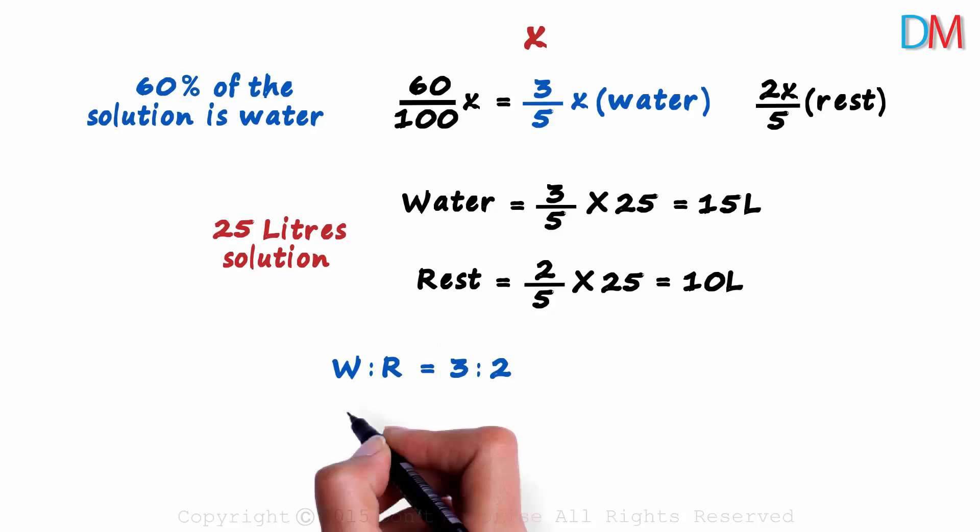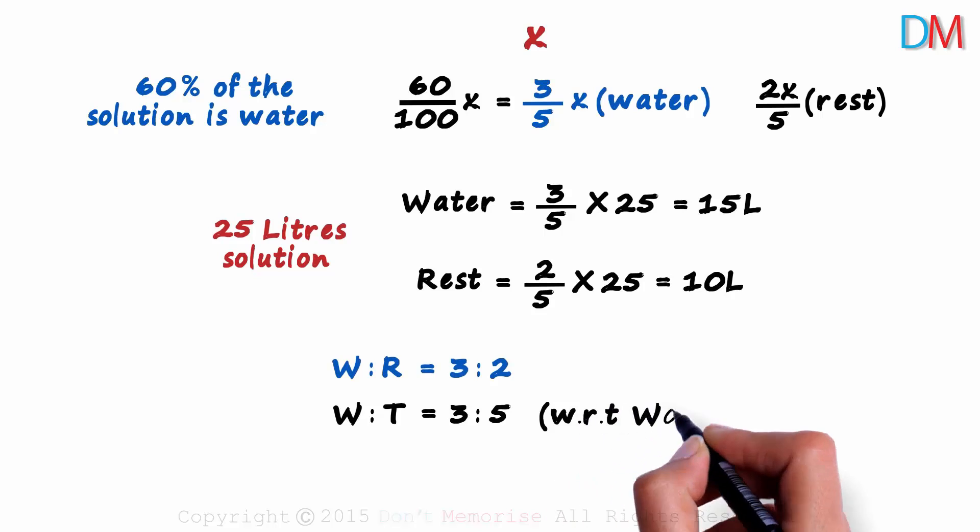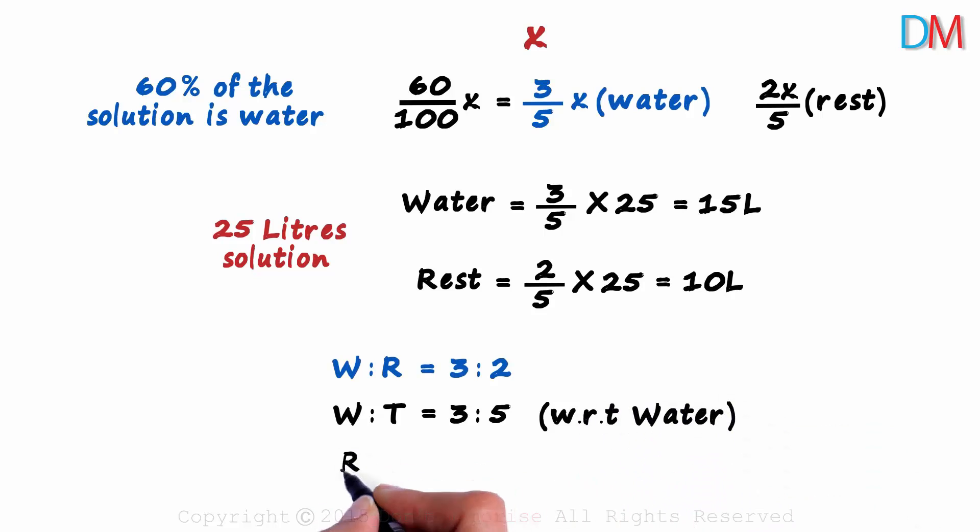And what will be the proportion of water here? It will be 3 to 5. Water over the total. This gives us an idea about the solution with respect to water. And what about the proportion of the rest of the solution? It will be 2 to 5. This gives us an idea about the solution with respect to the rest of it.